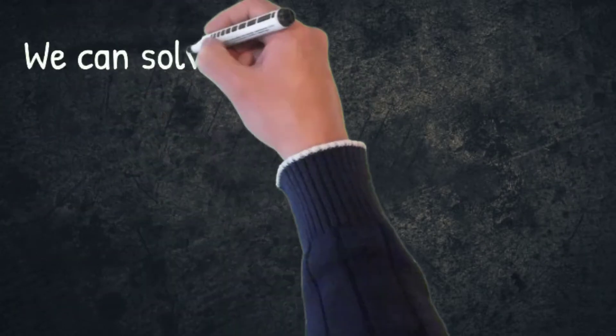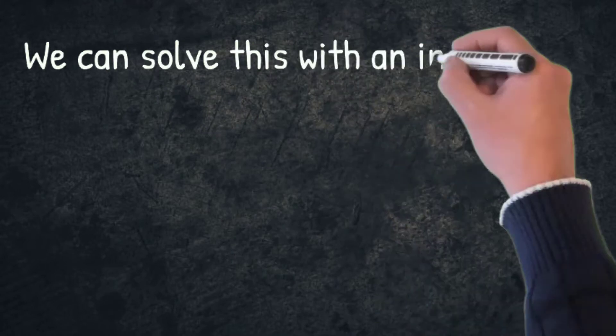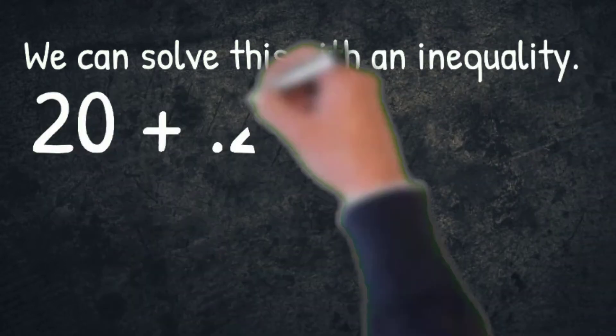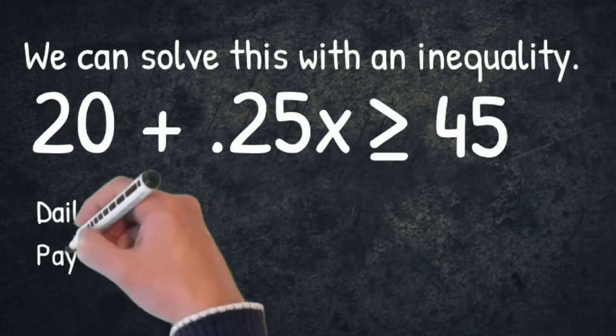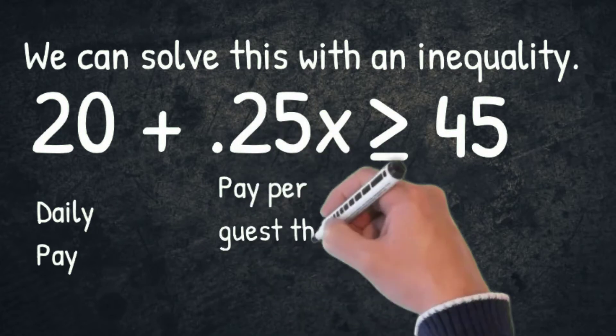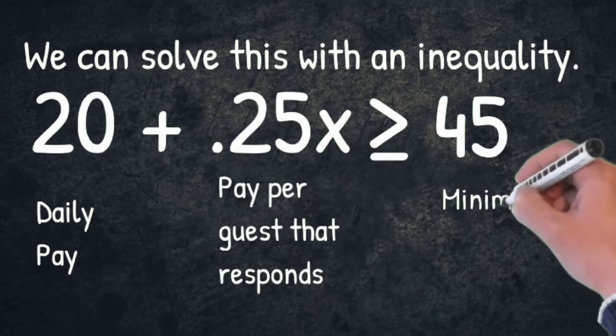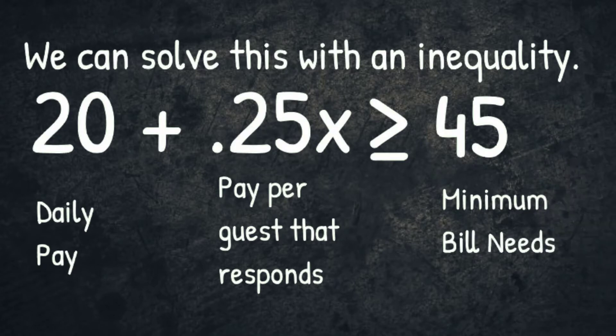Let's write an inequality to solve this. Start with the 20 per day, then the 0.25 per guest that responds, and then the number has to be greater than or equal to 45.